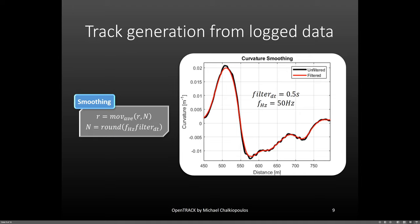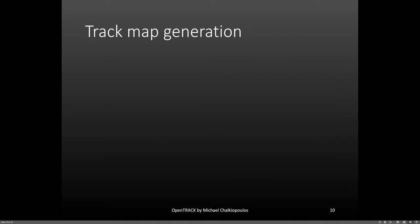In the plot on the right, you can see data recorded at 50 Hz filtered with this method for a period of half a second. Let's now talk about the track map calculation and generation.